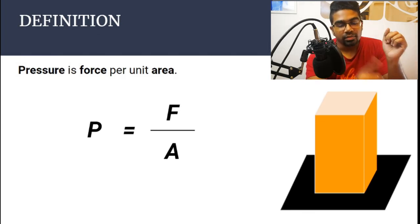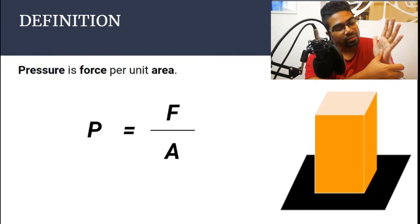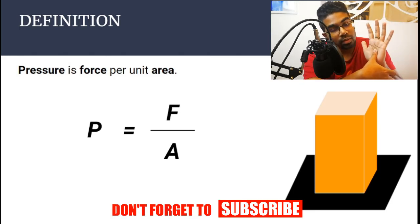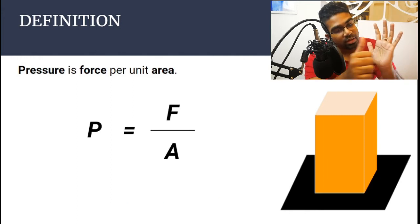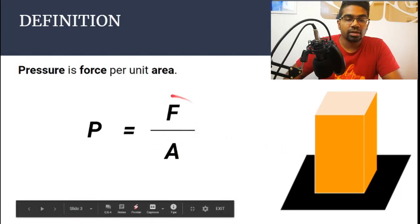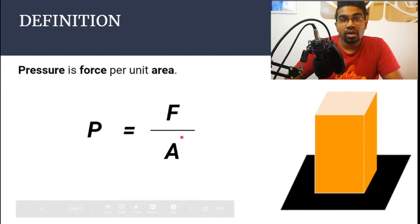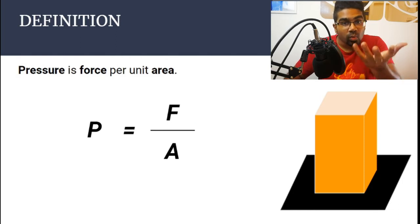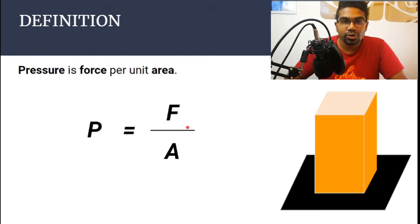The area we are talking about is the area of contact with the surface. So if I am talking about the pressure exerted by my thumb onto my palm, then it is the area of contact between my thumb and my palm — this is the surface area. The force can be of many different types. If we have an object resting on a table, then the pressure exerted on the table is due to the force which is its weight. The weight of the object is the force. Pressure is force per unit area.